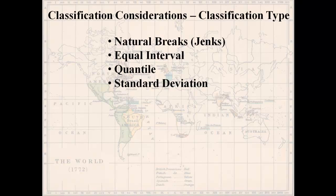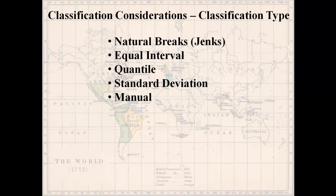Standard deviation is a way of classifying normally distributed data. If your data follows a bell-shaped normal curve, you can make intervals one, two, or three standard deviations from the mean, giving you an idea of what percentage of the data lies inside each interval. And if all else fails, you can set intervals manually — dragging or typing in the class breaks directly in ArcGIS. You'll get a lot of experience doing this in your labs.